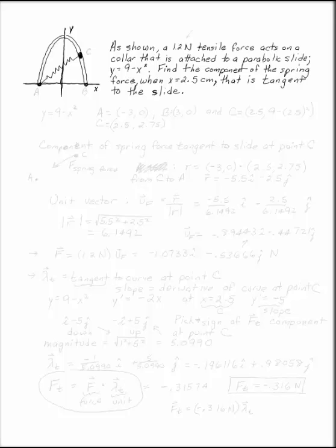A 1.2 newton tensile force from a spring acts on a collar attached to a parabolic slide determined by the function y = 9 minus x squared. We want to find the component of that spring force tangent to the slide when x equals 2.5 centimeters.